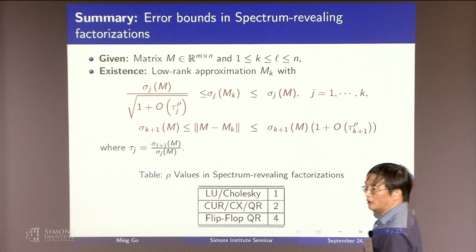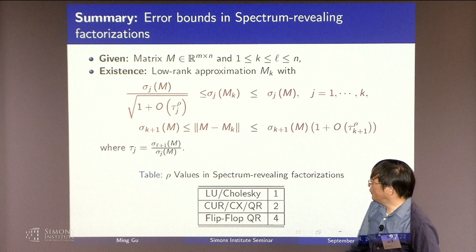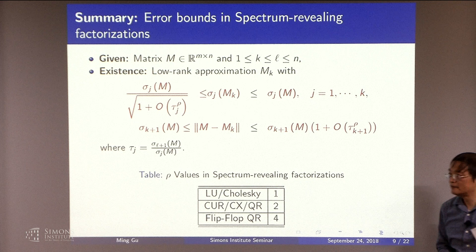But if you do randomization, you can do this very quickly. And the same thing with the Cholesky. Or even with the CUR, CX factorizations, you have a way to pick the column pivots very quickly. Yes? Flip-flop QR. Does that correspond to one step of the Francis QR algorithm for computing eigenvalues?